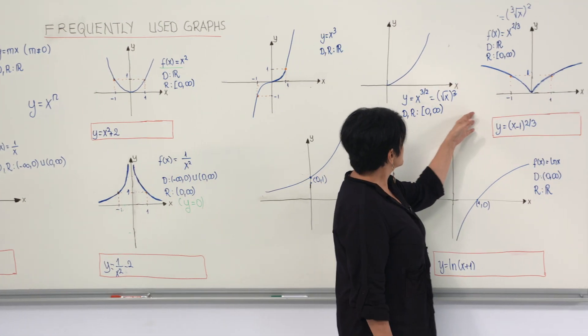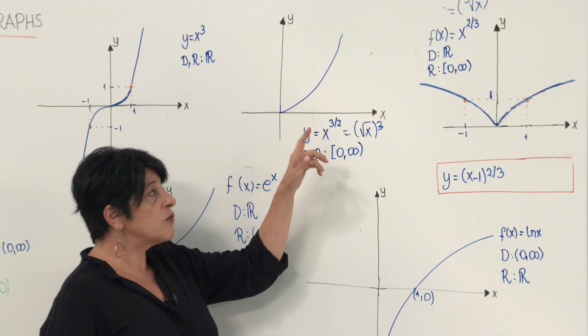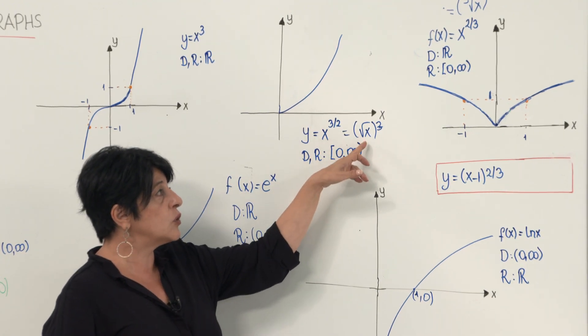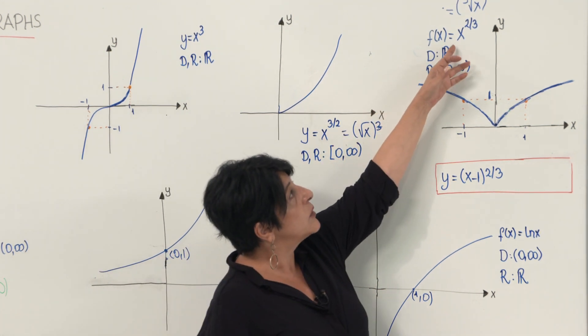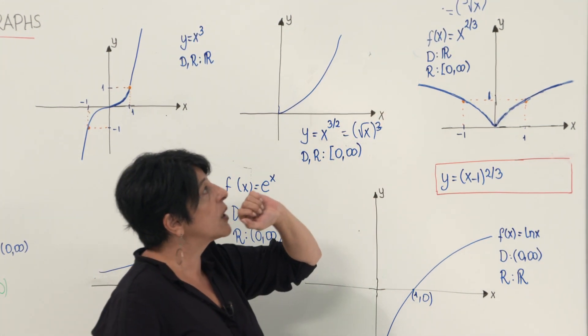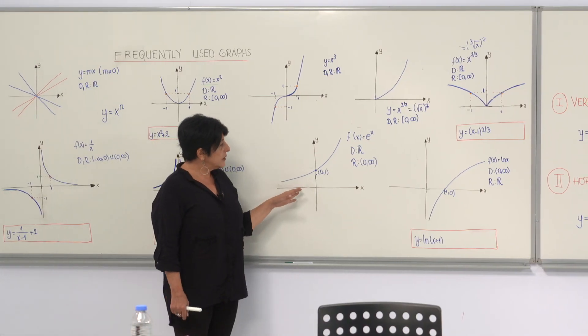Here are the graphs of y equals x to the power 3 over 2 and 2 over 3. Recall that x to the power 3 over 2 is the cube of square root of x, whereas x to the power 2 over 3 is the square of cube root of x.